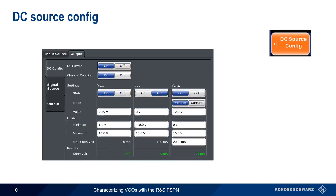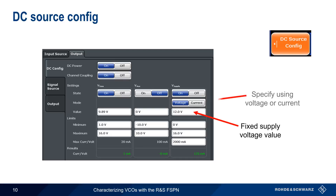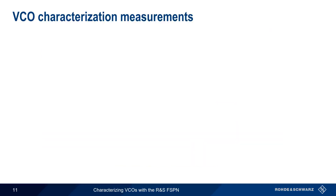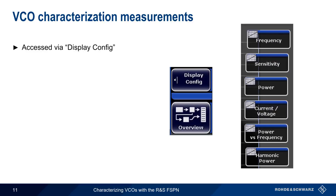The value of the fixed or supply voltage is defined under DC Source Config. Here, we've configured the supply voltage to be a constant 12 volts. This is also where we can specify current instead of voltage, for example if testing a YIG oscillator. During operation, the DC Source Configuration dialog can also be used to monitor the amount of current being delivered by each source. Now that we know how to configure voltages, let's move on to measurements, accessed using the Display Config soft key.